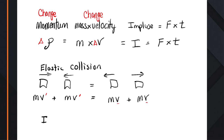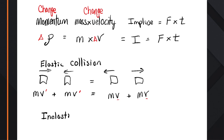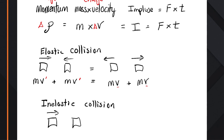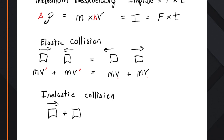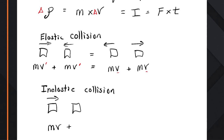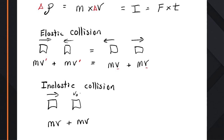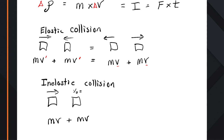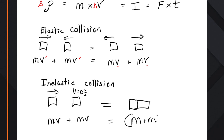For an inelastic collision, you have two objects coming together: mass times velocity plus mass times velocity. In this example, one object is sitting still so its initial velocity is zero. After they come together — like two railroad cars — you add up the two masses together because they're stuck, and they're moving at the same velocity: (m₁ + m₂) × v_final.